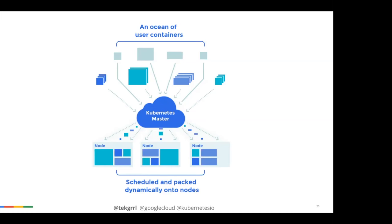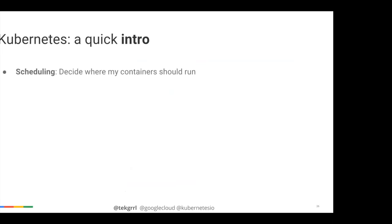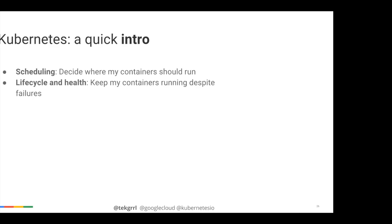Kubernetes is basically a master-node system — nodes can run anywhere in a cluster, on-premise, in the cloud, or on a Raspberry Pi. What does Kubernetes give us? It decides where our containers should run: you tell Kubernetes you want to run a container, it runs it and hooks it up to other components and abstractions. It manages lifecycle and health of containers, keeping them running despite failures. Containers are ephemeral and replaceable; Kubernetes makes sure the right number are running at any given time.